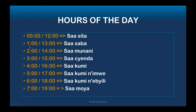Some people use 12-hour style and others use 24-hour style — but the Kinyarwanda words are the same. For two o'clock or 14:00 we say 'samanani.' For three o'clock or 15:00 we say 'satatu.' For four o'clock or 16:00 we say 'sakumi.' For five o'clock or 17:00 we say 'sakumi na rimwe.' For six o'clock or 18:00 we say 'sakumi na biri.'